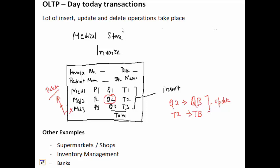Another example of OLTP are supermarkets and shops where customers purchase products, so insert happens. Customer return the products, so delete happens and customer increase or decrease the quantity of the product, so update happens.